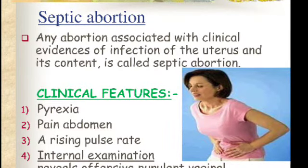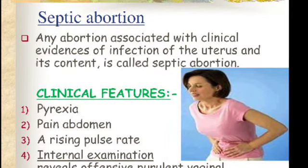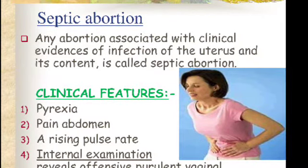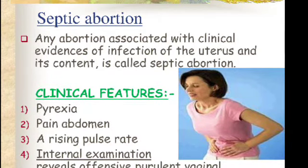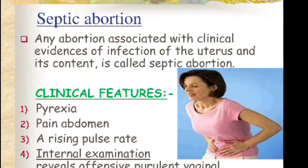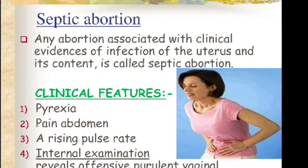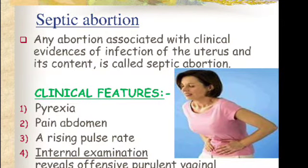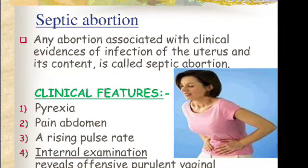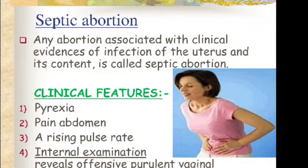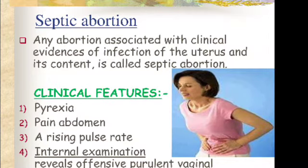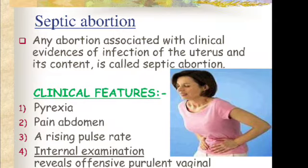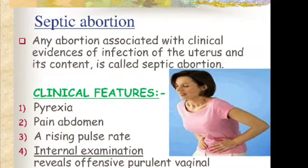Pain in the abdomen of varying degree is an almost constant feature. Rising pulse rate of 100 to 120 per minute is also noted. Internal examination reveals purulent vaginal discharge, tender uterus, patulous os, or a boggy feel of the uterus. Pelvic findings are variable and depend upon the spread of infection.